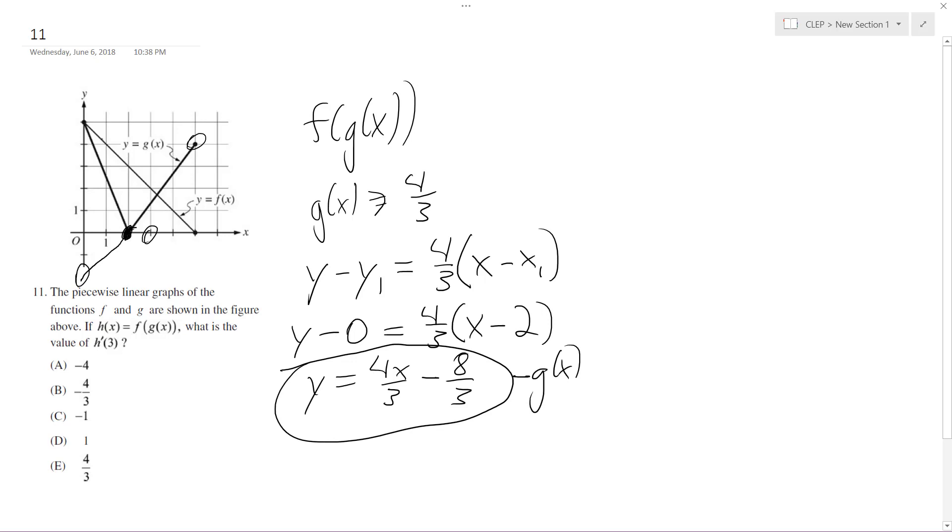So f of x - it's pretty nice because it's just a linear equation with a slope of negative 1, and it crosses the y axis at 5. So f of x is equal to negative x plus 5.